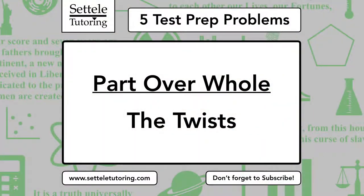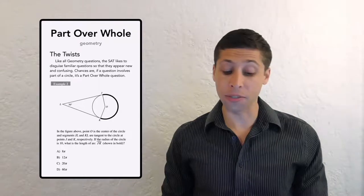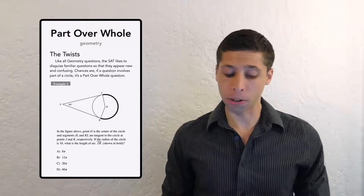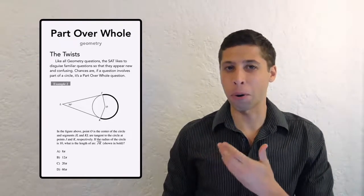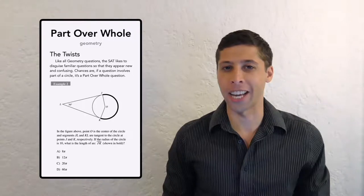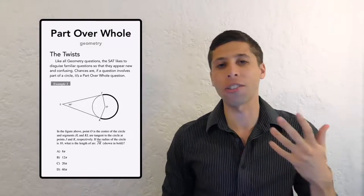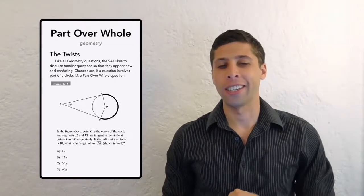Not all part over whole questions are going to be as straightforward as the one we just did, so let's look at some ways they're going to twist the question to make it harder to recognize. Like all geometry questions, the SAT likes to disguise familiar questions so that they appear new and confusing. Chances are, if a question involves part of a circle, it's a part over whole question. Just looking at the picture, you can tell it's much more complicated than the last example because there's all this other stuff going on — but those twists should not prevent us from answering it.